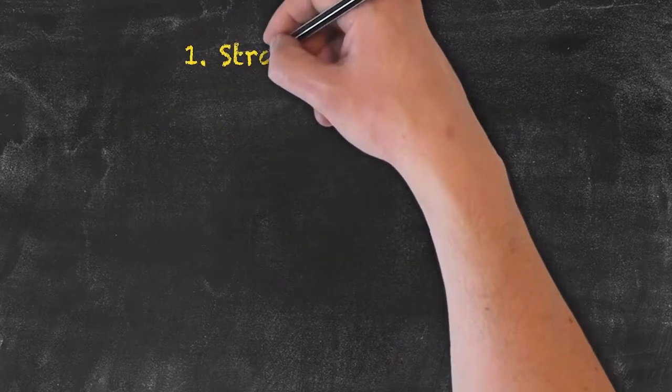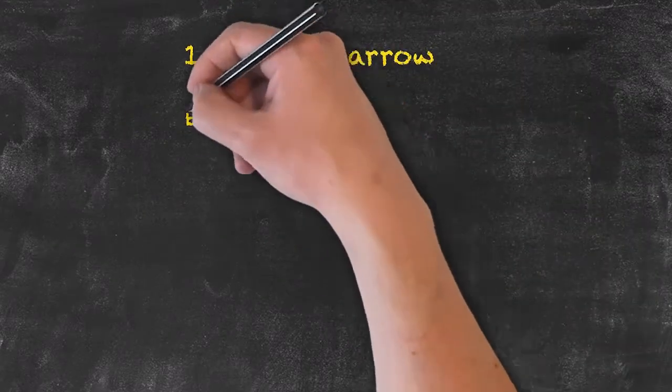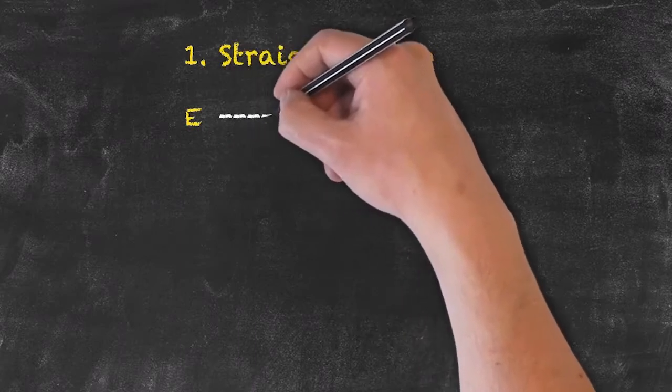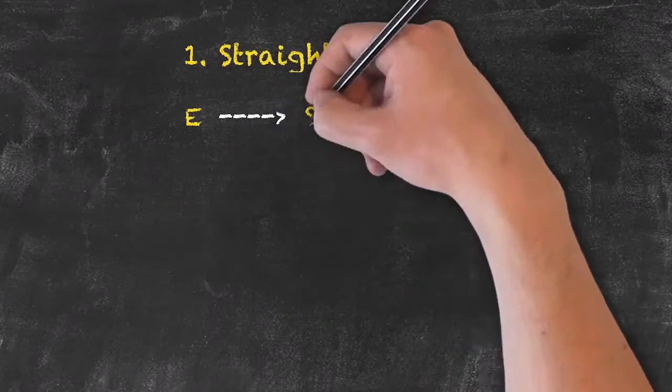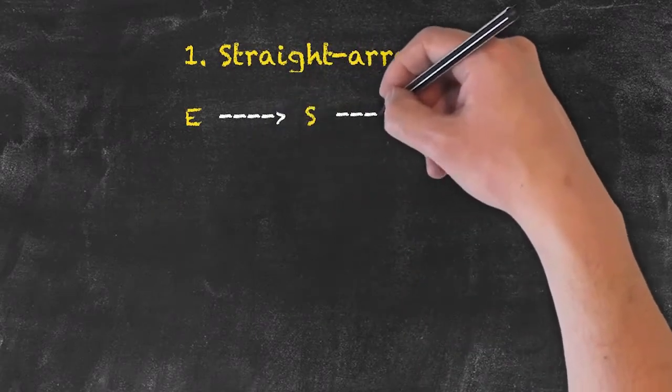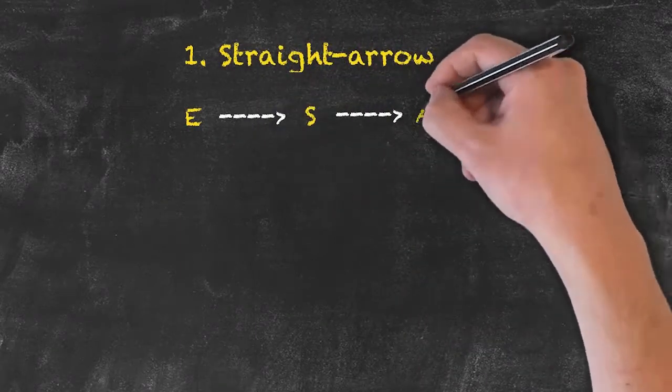The straight arrow, as its name implies, is simply running through each of the three phases — E, S, and A — in a straight line.